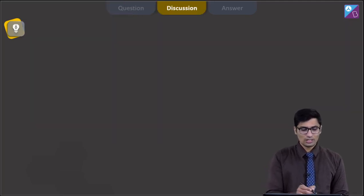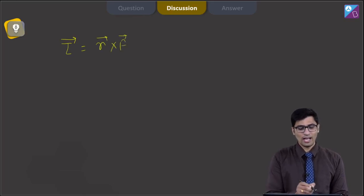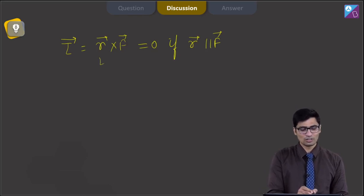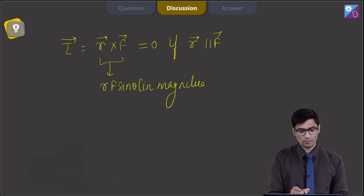Dear students, the torque for a force is given as r vector cross F vector. And the torque will be 0 if the r vector is parallel to F vector. As we know the magnitude of r cross F is equal to r F sin theta.